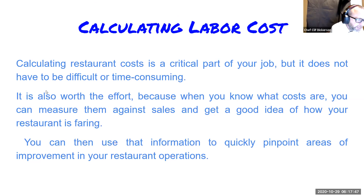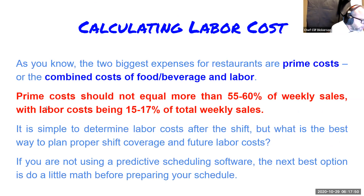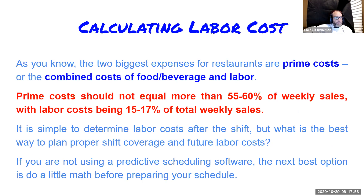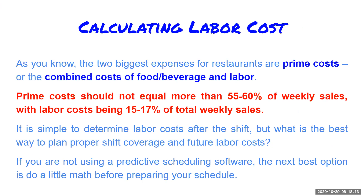Calculating prime cost: the two biggest expenses for restaurants are prime costs — the combined costs of food, beverage, and labor. Prime costs should not equal more than 55 to 60 percent of weekly sales, with labor costs being 15 to 17 percent of total weekly sales. If you're not using predictive scheduling software, the next best option is to do a little math before preparing your schedule.